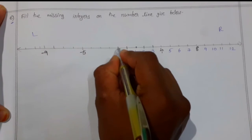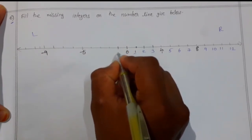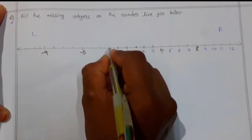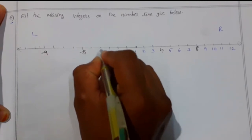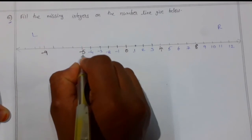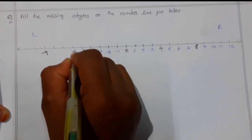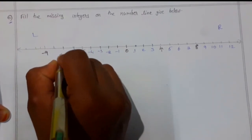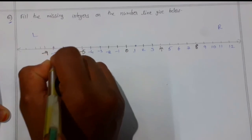The first left number to the zero is minus one, then we will be having minus two, then minus three, minus four. Minus five is already marked, then minus six and minus seven, minus eight, minus nine.